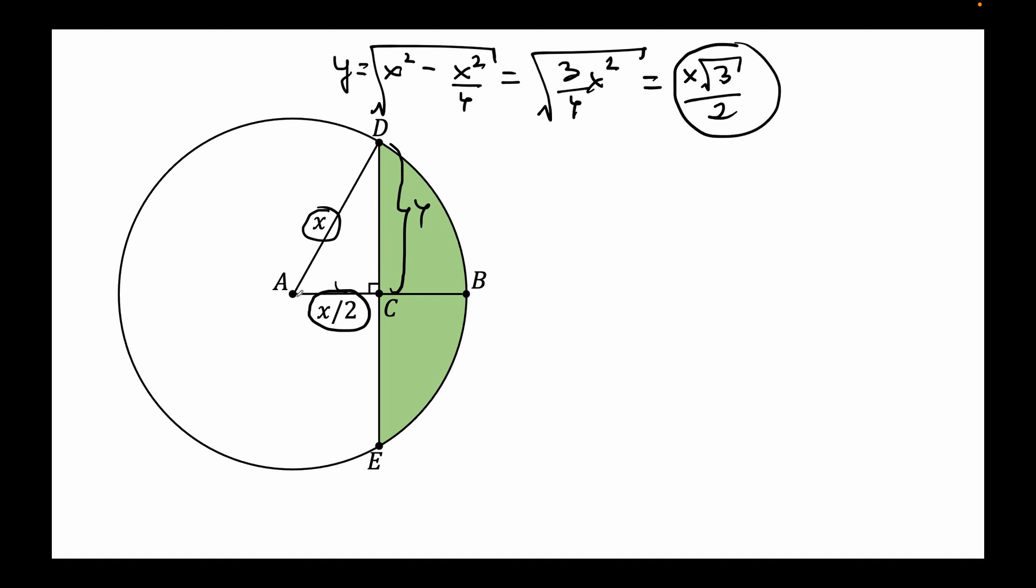We get the area of the triangle ADC by multiplying the base with the side. X divided by 2 times the side and dividing this expression by 2. Well, in this case we don't have to divide it by 2 because remember we want the area of the triangle ADE, which is times 2 of the area of the triangle ADC.